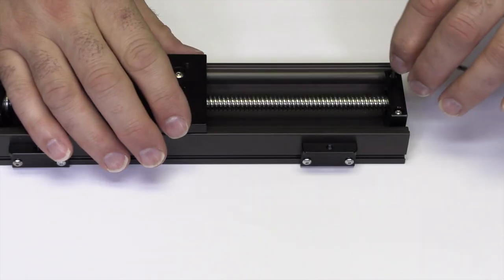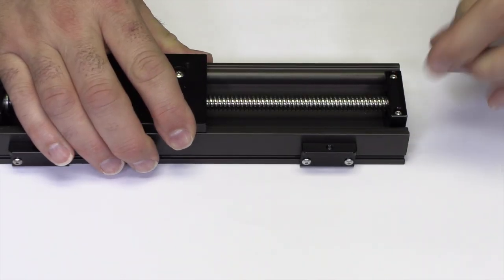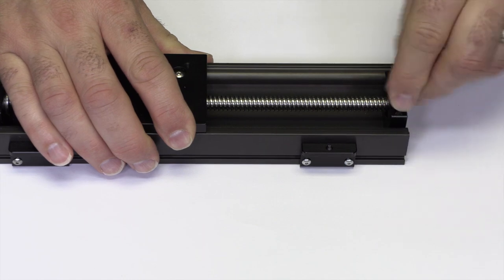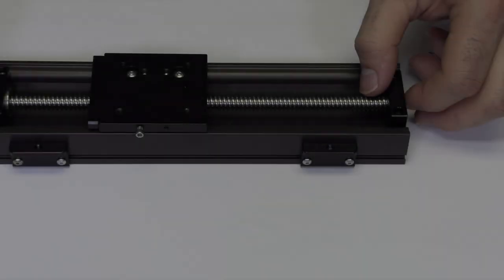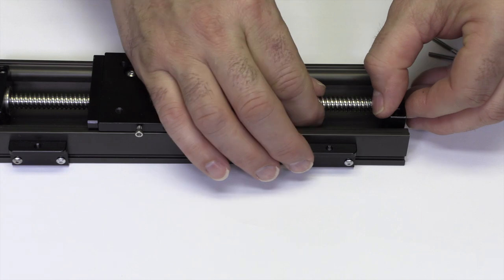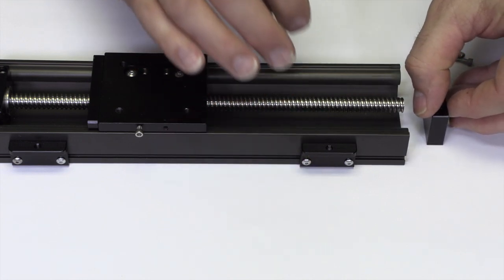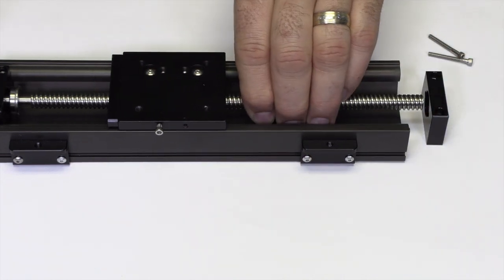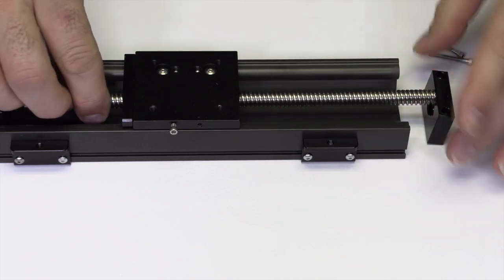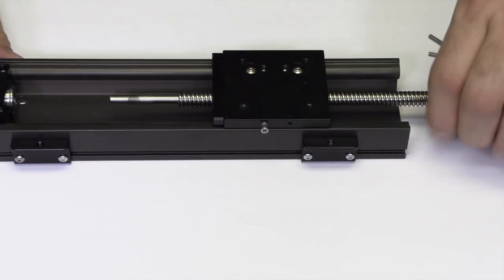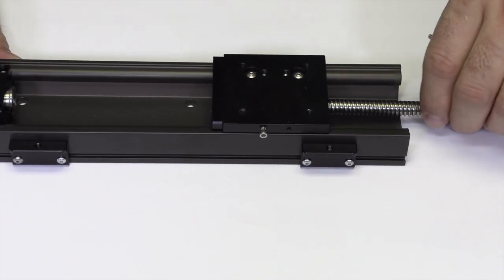On the opposite end of the motor, use a 3/32 inch Allen wrench to remove the two idler mount screws. Remove the mount from the slide. This will allow the lead screw to be pushed out of the motor mount. Thread the lead screw out of the carriage and the lead screw nut.